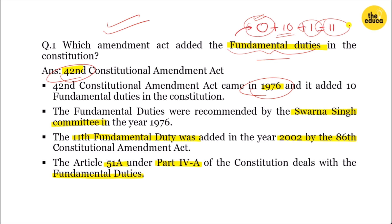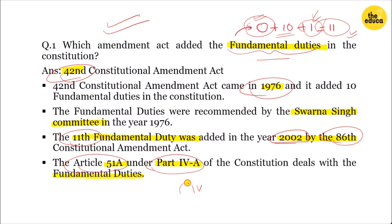The total number of Fundamental Duties is 11. One was added later by the 86th Amendment. The Fundamental Duties are listed under Article 51A, in Part 4A of the Constitution.